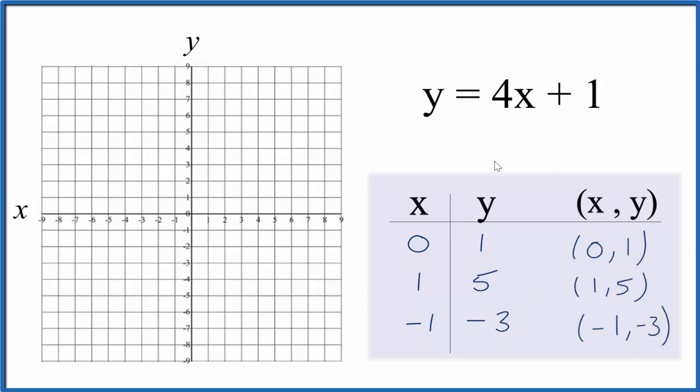So these are the points we'll graph for the equation y equals 4x plus 1. I could have chosen other points, but these are nice—they fit nicely on our graph. We have x is 0, y is 1. So we find x is 0, then y is 1, right there.